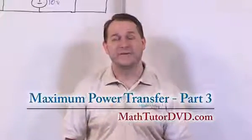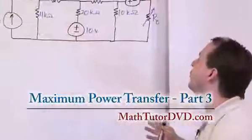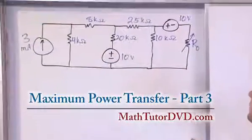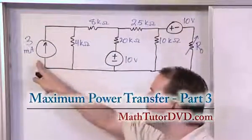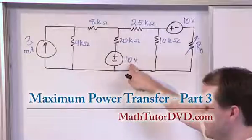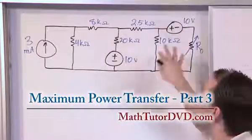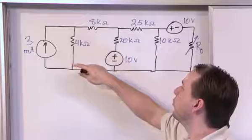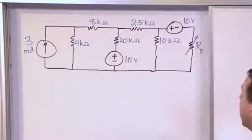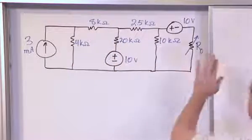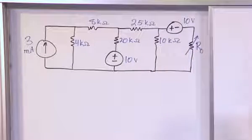Hello and welcome to this section of the circuit analysis tutor. Here we're going to work on a circuit that has a 3 milliamp current source, a 10 volt voltage source, another 10 volt voltage source, and a nice assortment of resistors — all in the kiloohm range. The entire circuit is hooked up to a load resistance we're calling R sub naught.